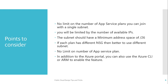Now let's understand which points to consider before designing your solution with a shared app service plan subnet. First, there is no limit on the number of app service plans you can join with a single subnet — you can add as many as needed. Second, you will be limited by the number of available IPs. For example, with a subnet range of /28, you will have only 11 IPs available for app service integration.